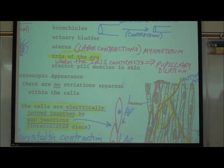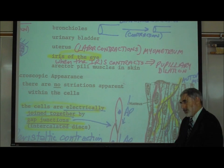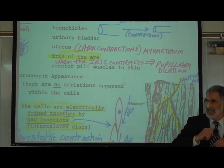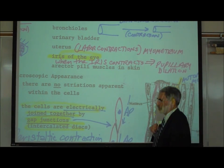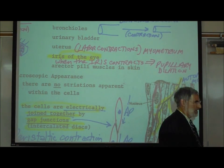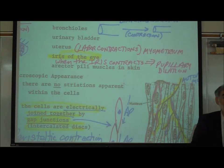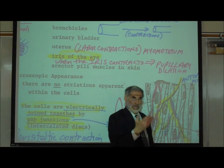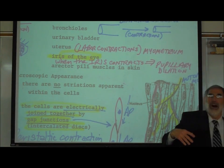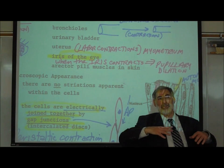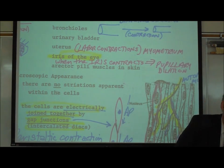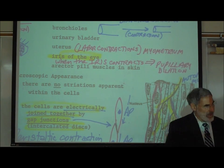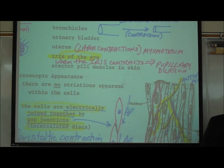Also, the erector pili muscles in the skin. There's a muscle in the skin called the erector pili muscle — pili means hair — and it erects the hair. This muscle in your skin causes the hairs to stand up, creating the goose bump or goose pimple effect, which commonly happens when we're either cold or frightened. All of that is covered in the video on the skin.